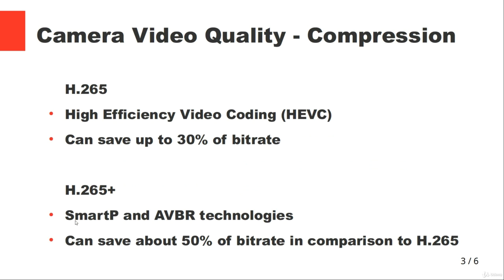You can save up to 50 percent moving to H.265, and then using H.265 with smart and AVBR technologies you can save up to 50 percent compared to standard H.265. If you're using eight megapixel cameras, you would have to use H.265+. You also need to make sure your NVR can handle that compression type, unless you want to downgrade the resolution in the camera settings.